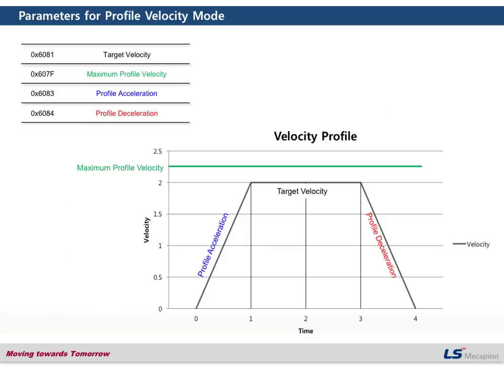With those four kinds of parameters, we can make this kind of profile. The first target velocity here means something like this. In this example, number two is the target velocity. Regarding the unit, we are going to talk about that on the next page. So let's just look at the values. In this graph, the target velocity is 2.